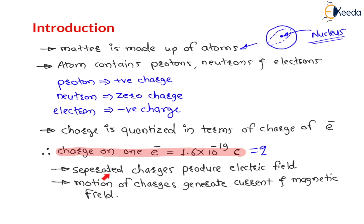If two separated charges are taken together, there will be an electric field. So separated charges produce an electric field. And whenever any charge moves — whenever there is a motion of charges — that generates current. And because of this current there is a magnetic field. So in general, we have to study all these fields: gravitational field, electrical field, and magnetic field.